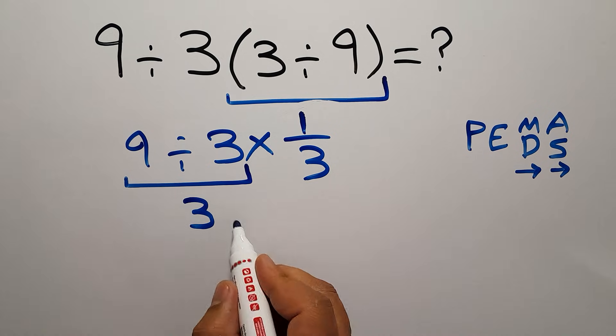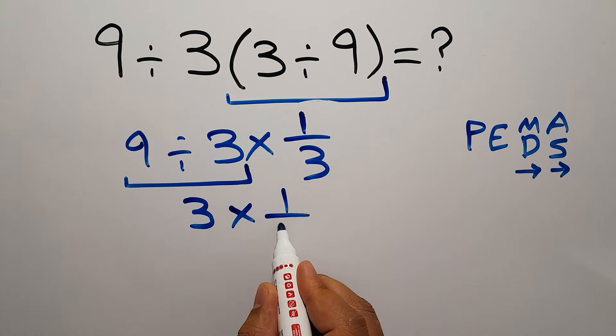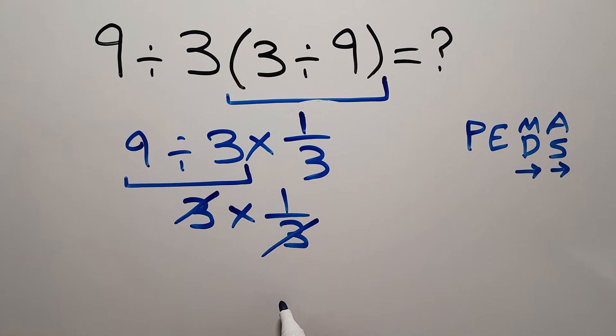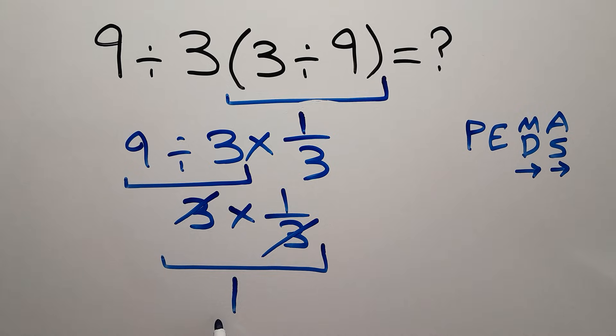And 3 times 1 over 3. We can easily cancel these 3 and this 3. So we have just 1. And this is our final answer to this problem.